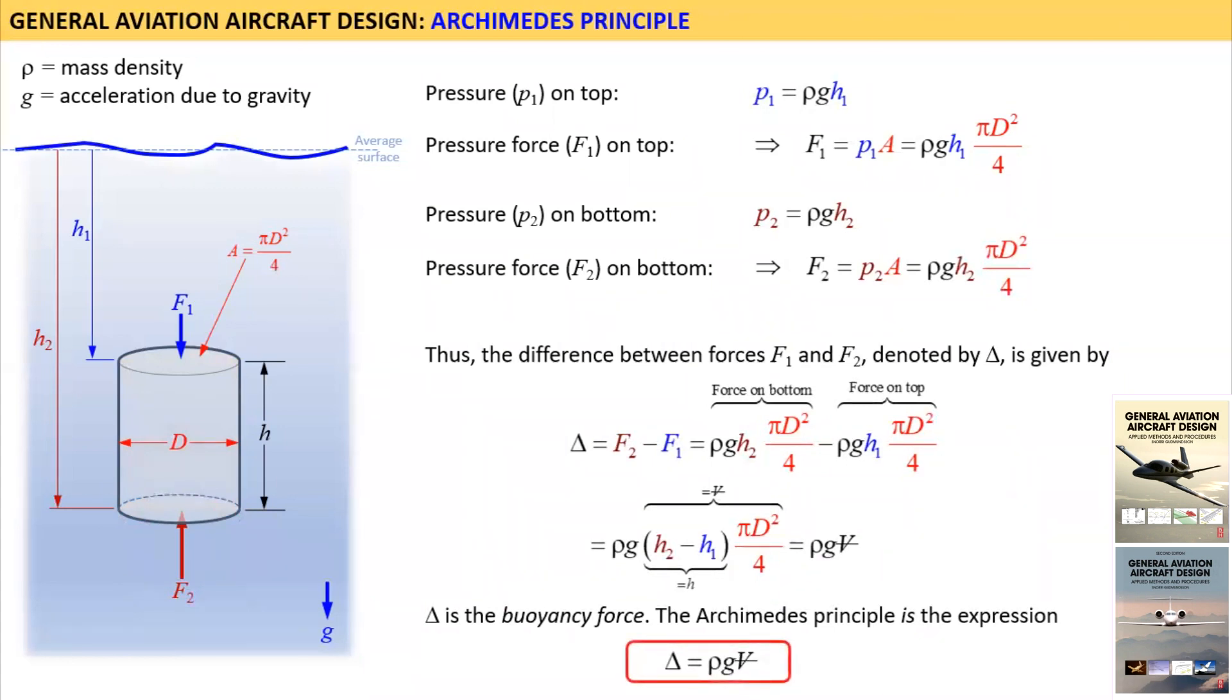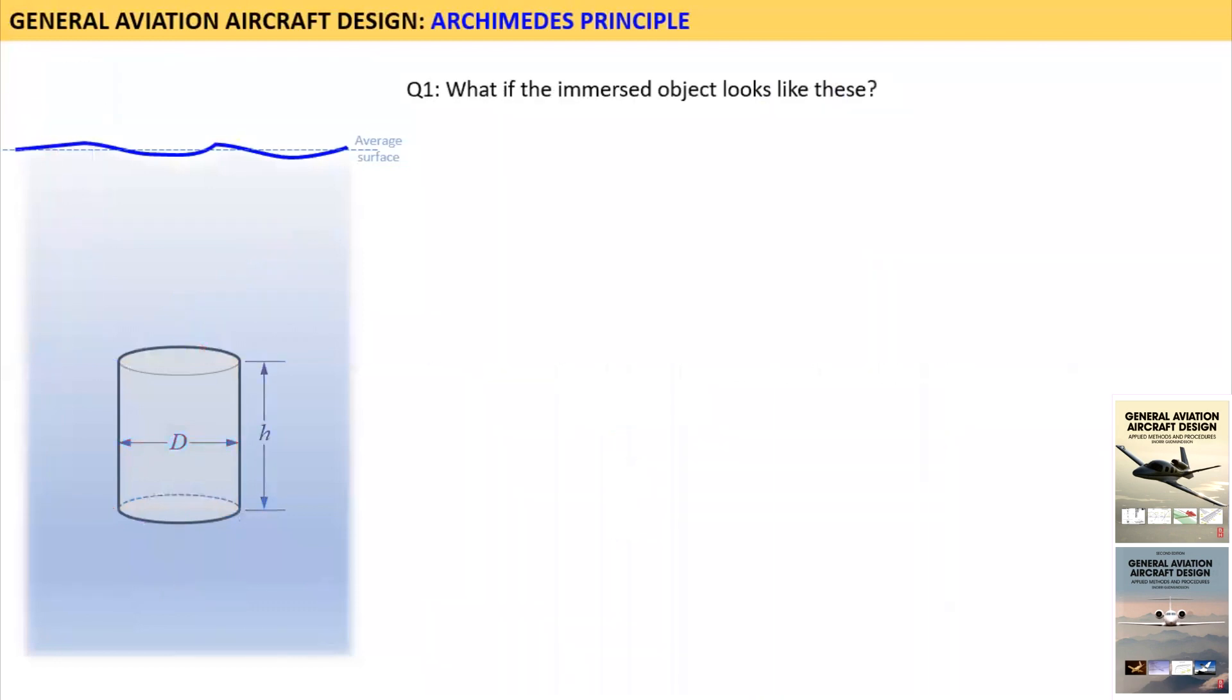Once we understand how the buoyancy is generated there are frequently two questions that arise. First, what if the immersed body is not a cylinder but something like these? Let's say the body is a cone. If submerged such its base is horizontal the resulting pressure distribution is uniform and generates a vertical force that points upward.